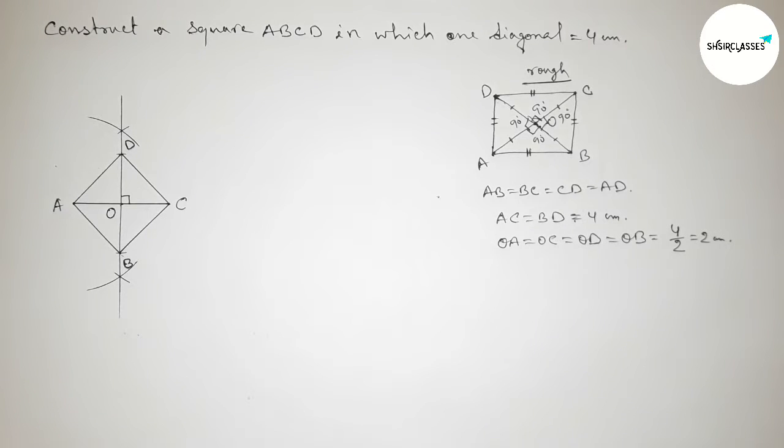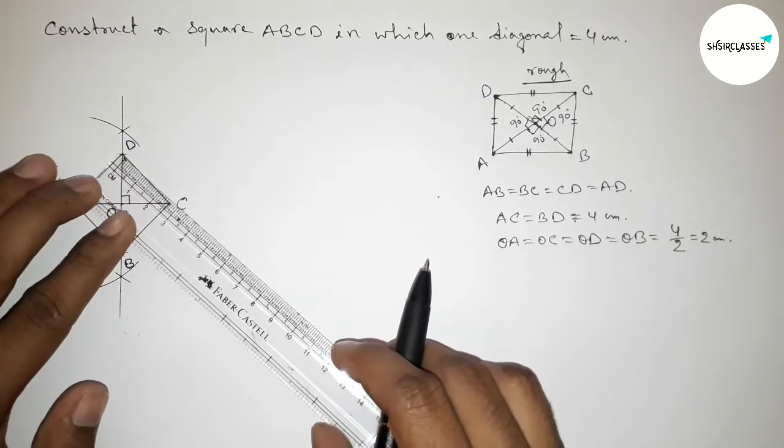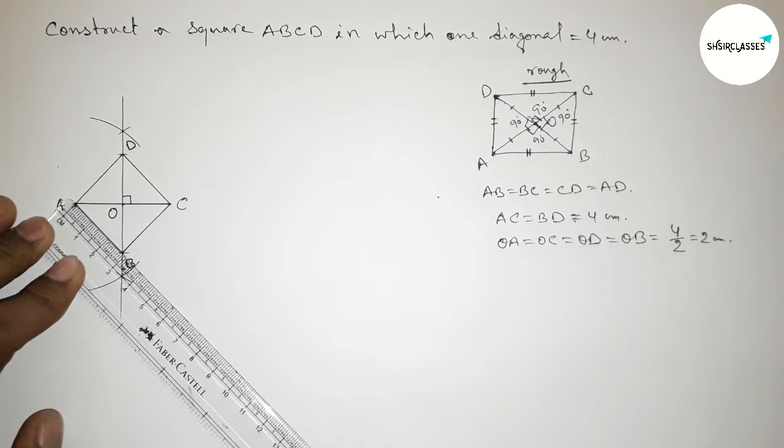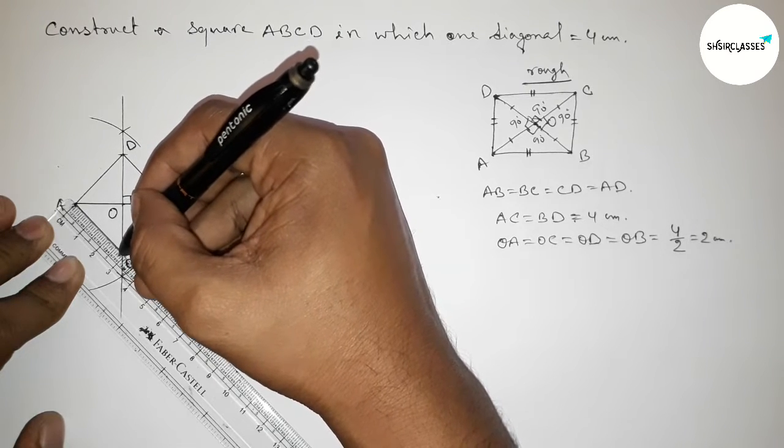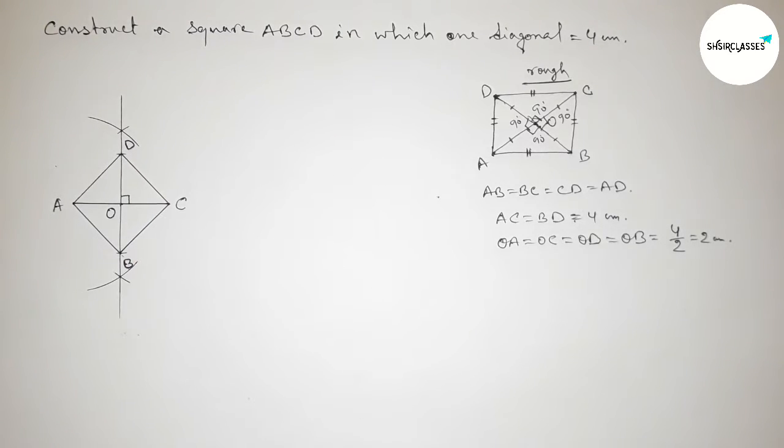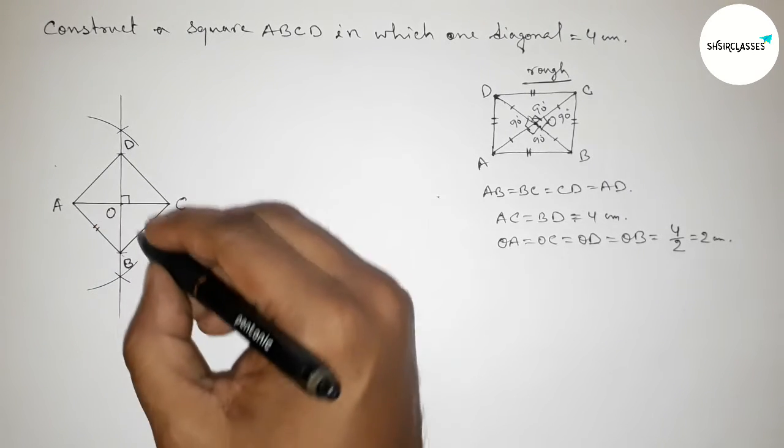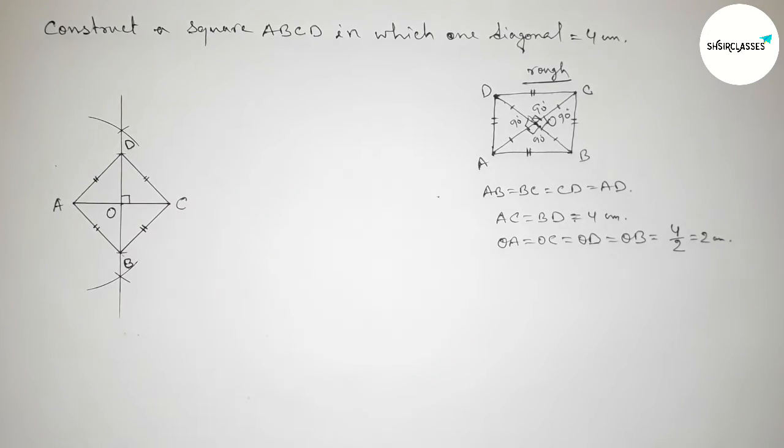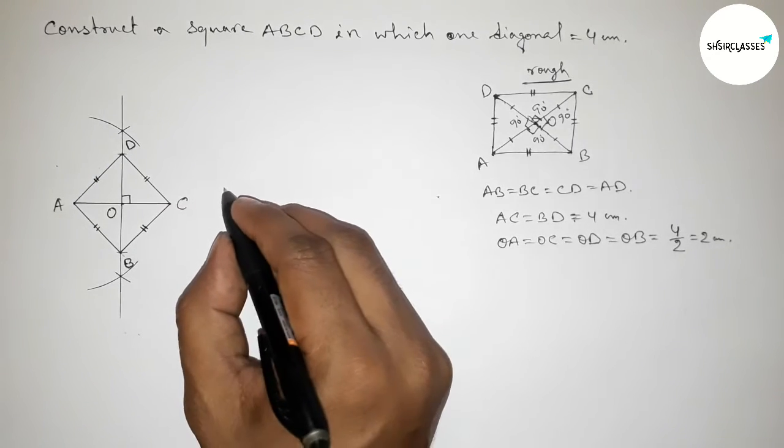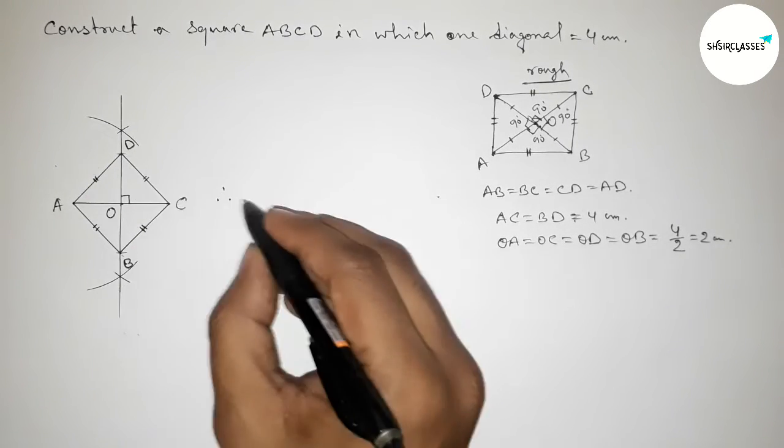Now I am going to check the length of each side of this square by using a scale. So this is approximately 2.8 centimeter. Okay, so all the sides of this square are equal.